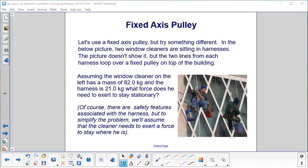We're still going to use a fixed axis pulley, but we're going to try something different. In the below picture, we have two window cleaners. They are sitting in harnesses. The picture doesn't show it, but the two lines from each harness loop over a fixed pulley on top of the building. We will assume the window cleaner on the left has a mass of 82 kilograms and the harness is 21 kilograms. What force does he need to exert to stay stationary? We'll assume that the cleaner needs to exert a force to stay where he is.